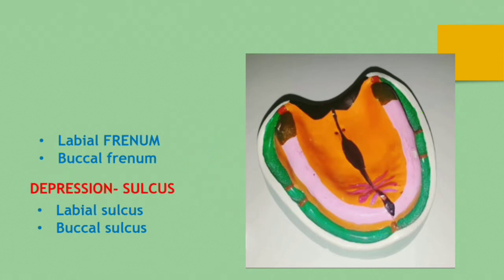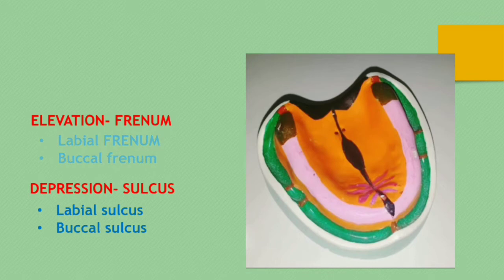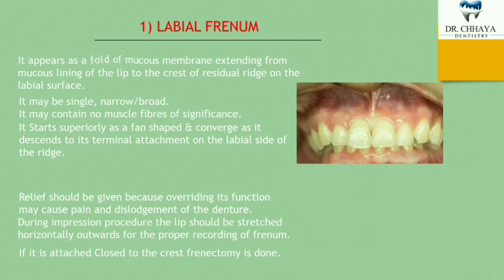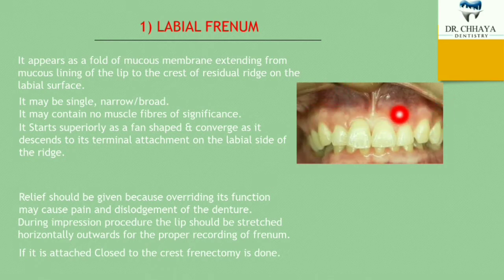To summarize: depressions are sulci and elevations are phrenums — giving us the labial phrenum, buccal phrenum, labial sulcus, and buccal sulcus. From an examination point of view, the labial phrenum appears as a fold of mucous membrane extending from the mucous lining of the lip to the crest of the residual ridge on the labial surface.